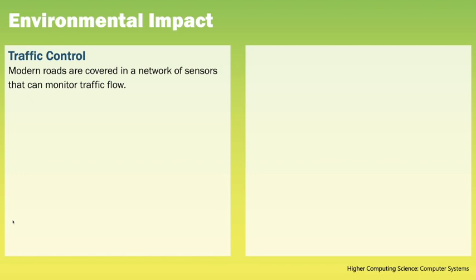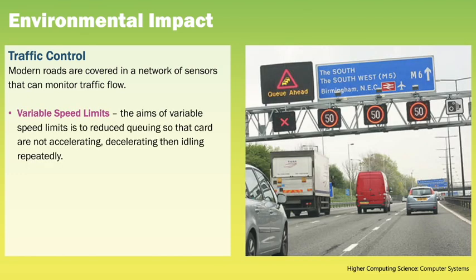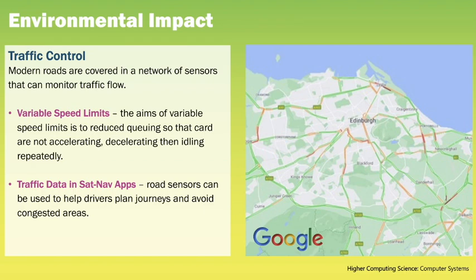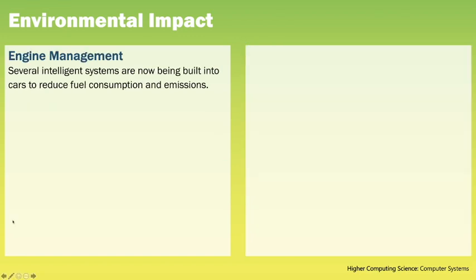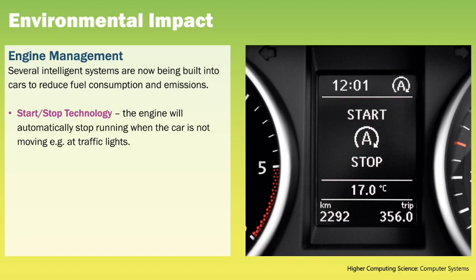There are a number of intelligent systems that can aid traffic flow. Variable speed limits can be raised and lowered automatically by sensor input and historic data, or manually controlled, with the aim of reducing queuing so cars are not repeatedly accelerating, decelerating and idling. Traffic data in satnavs can be updated in real-time, allowing drivers to adapt their route to traffic conditions, reducing congestion and journey time. Within modern vehicles, start-stop technology automatically stops the engine when the car is not moving — sensors in the clutch detect when the driver moves off and restart the engine in a millisecond, controlled by an intelligent system that differentiates between brief pauses and longer stops such as at traffic lights.